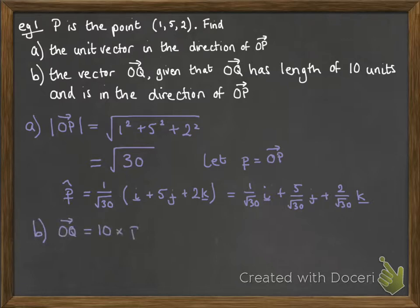For part b, OQ is then 10 times that unit vector. That unit vector is in the direction of OP and it's of length 1. So if we want something in the direction of OP but length 10 we just multiply it all by 10.